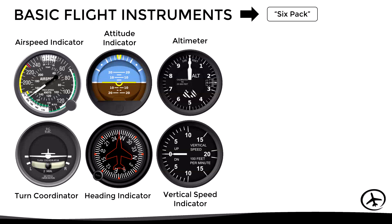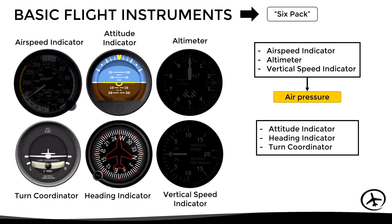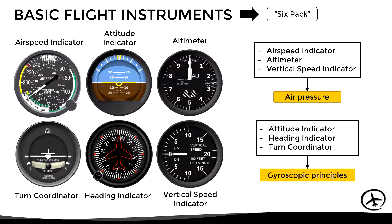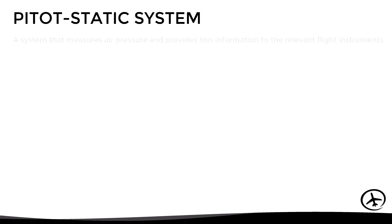However, it is not enough just to know what information these instruments give us and how to interpret it, but also to know how they work — that is, their principle of operation. Three of these instruments specifically — the airspeed indicator, the altimeter, and the vertical speed indicator — use air pressure to give their readings, while the attitude indicator, the heading indicator, and the turn coordinator rely on gyroscopic principles. In this video we are going to focus on the system that measures air pressure to power these three instruments, which is known as the pitot-static system.